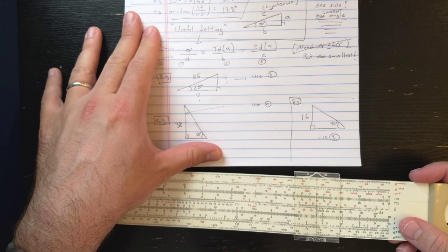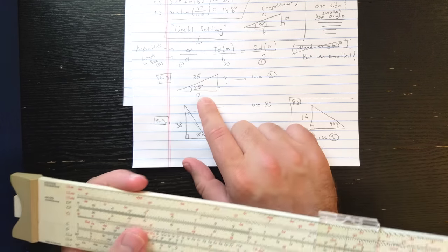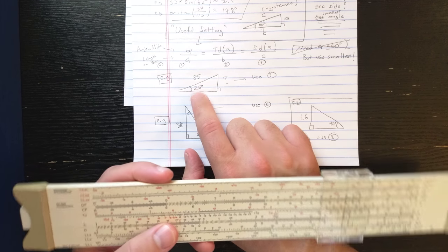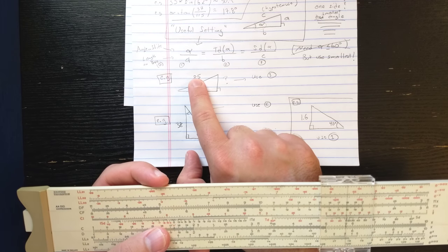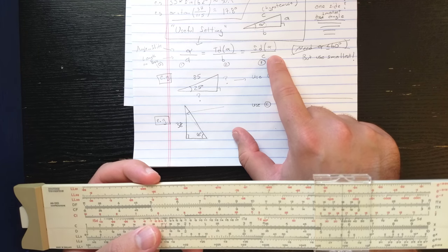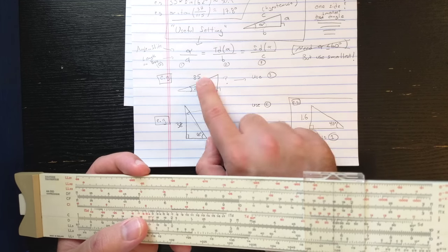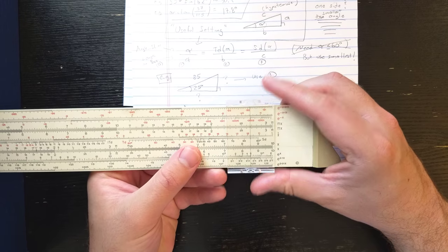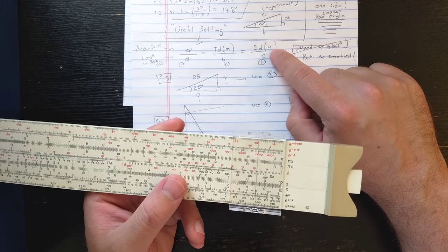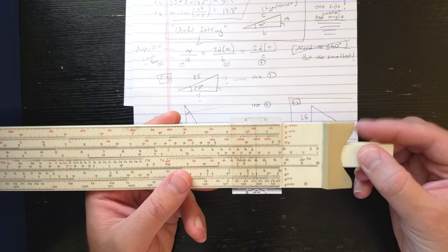So if we look at this triangle, see I have this 25 degree angle here, I know that's the smallest. So this is alpha 25. Here I have the hypotenuse, so I'm going to use setting three. So C, the 85, I'm going to find on the D scale to do setting three. And then alpha, the small angle, I'm going to set on SD.